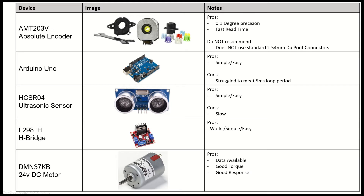The only reason I can't fully recommend it is because it does not use the standard 2.54 DuPont connectors you'd typically find on the Arduino, so I had to buy special connectors, a crimp tool, and special pins to get it to work. If I could have found an encoder with the same specs that uses those connectors, I probably would have bought that instead. Overall though, it's a really good encoder and it does have libraries on its website, so it was very easy to get up and running quickly.